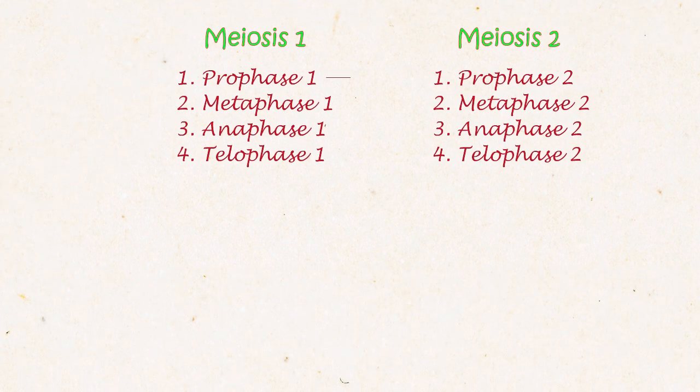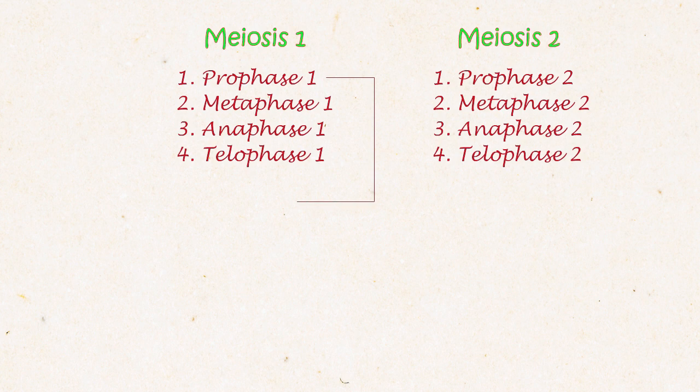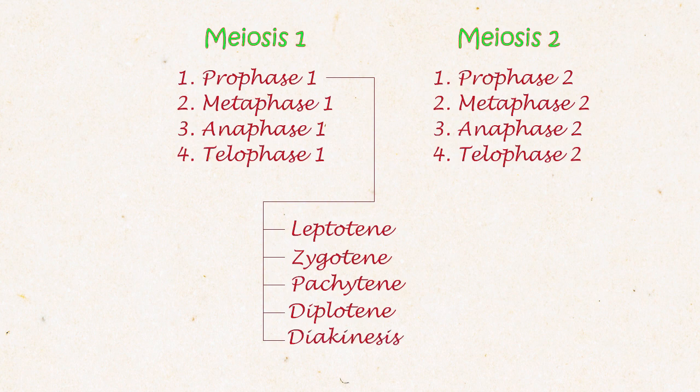However, Meiosis 1, Prophase 1 has five chronological events. They happen one after another. They are Leptotene, Zygotene, Pachytene, Diplotene and Diakinesis.